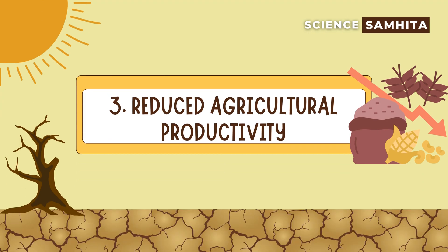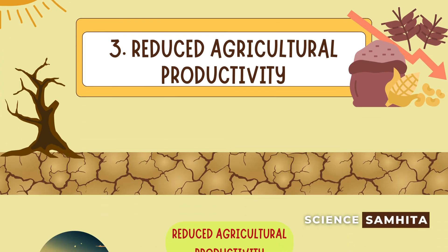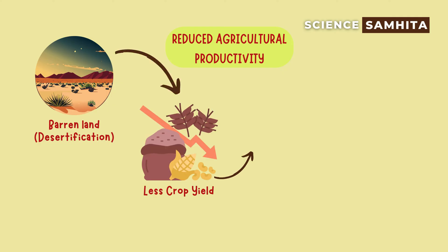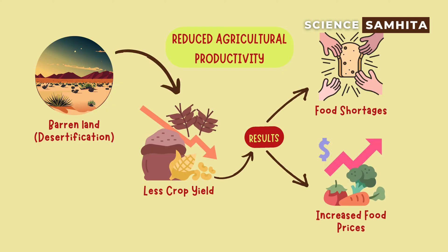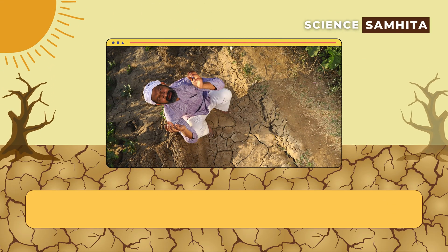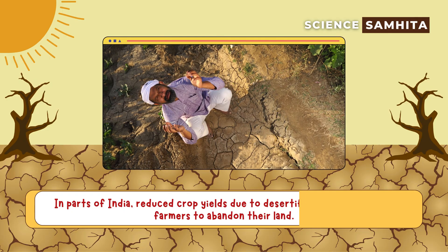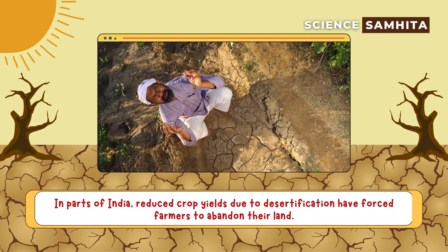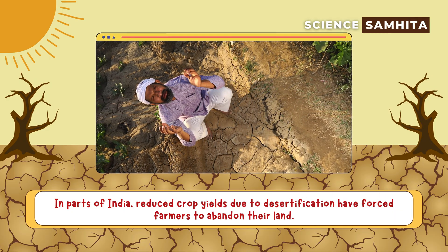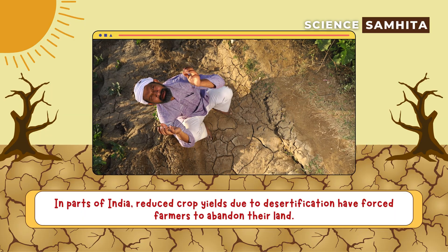Third, reduced agricultural productivity. Barren land leads to declining crop yields, resulting in food shortages and increased food prices. For example, in parts of India, reduced crop yields due to desertification have forced farmers to abandon their land.